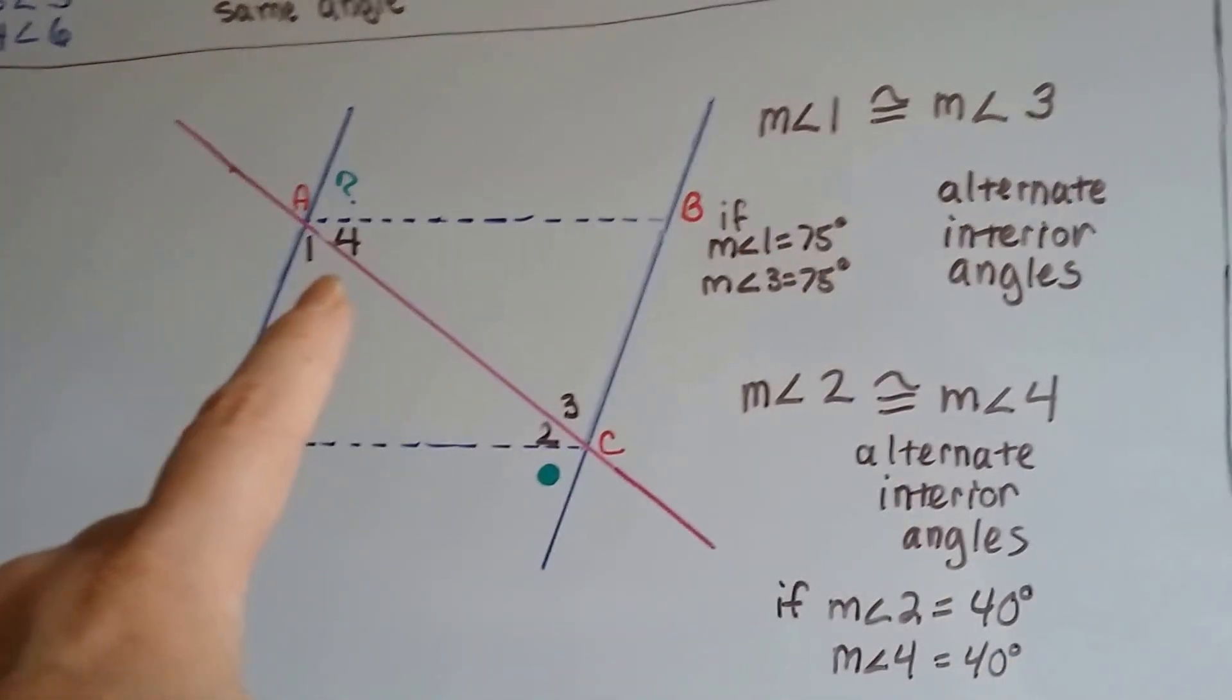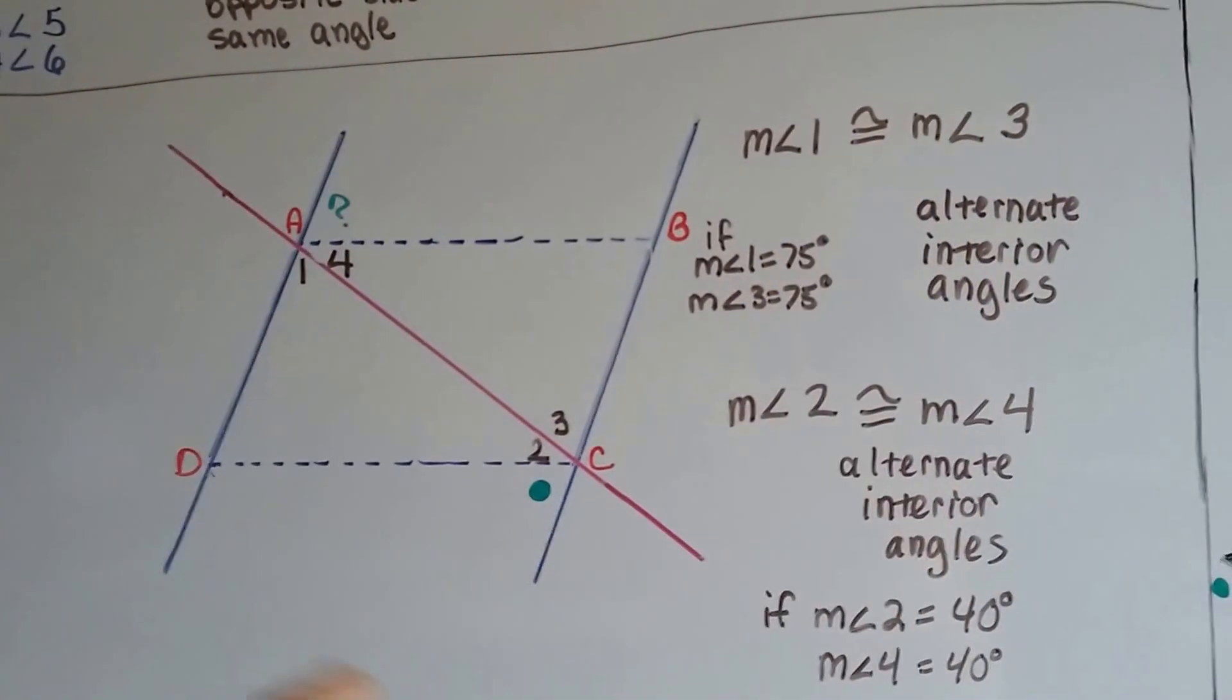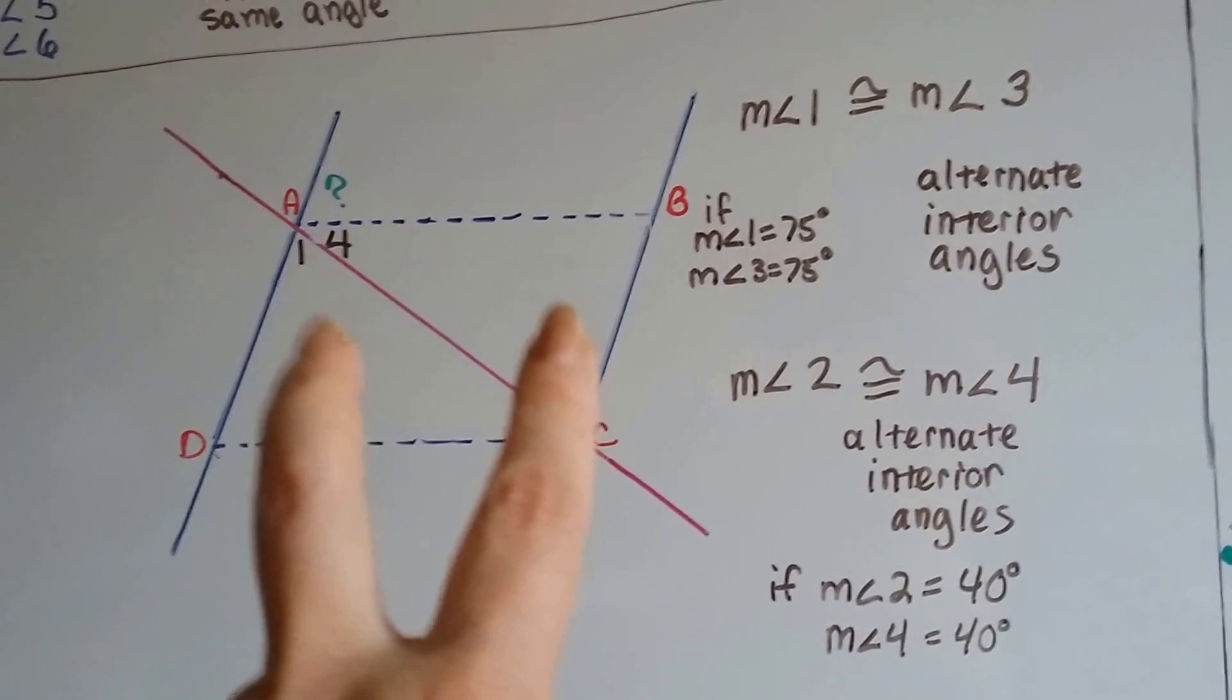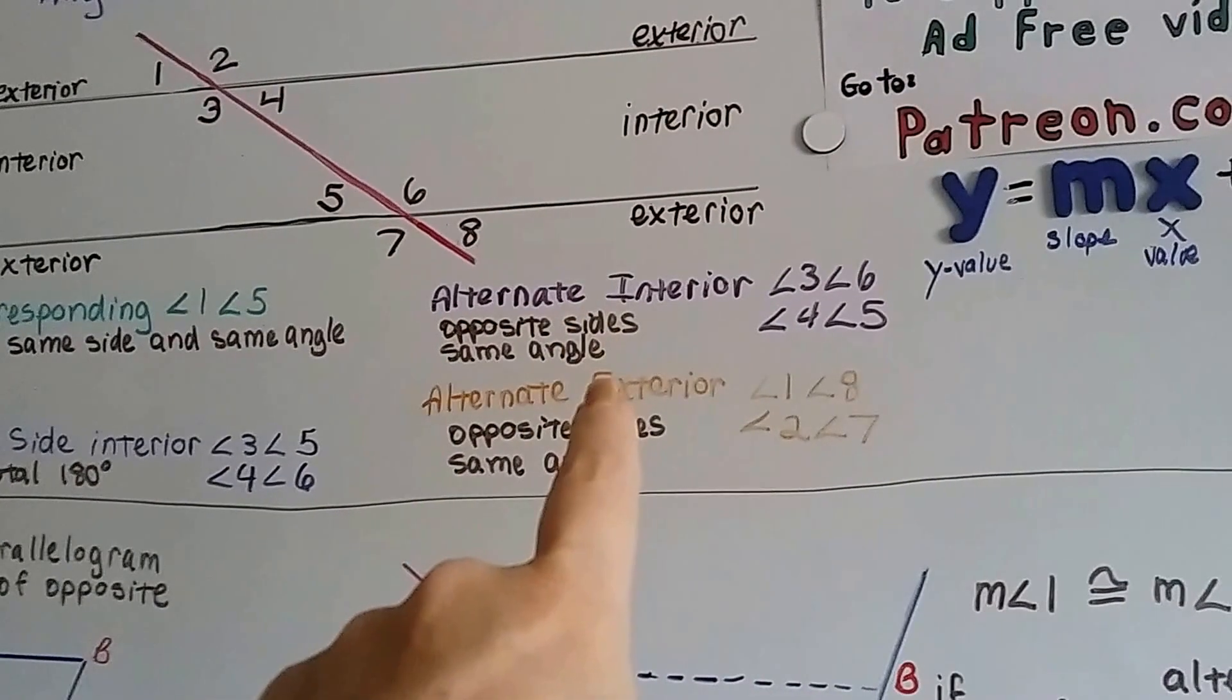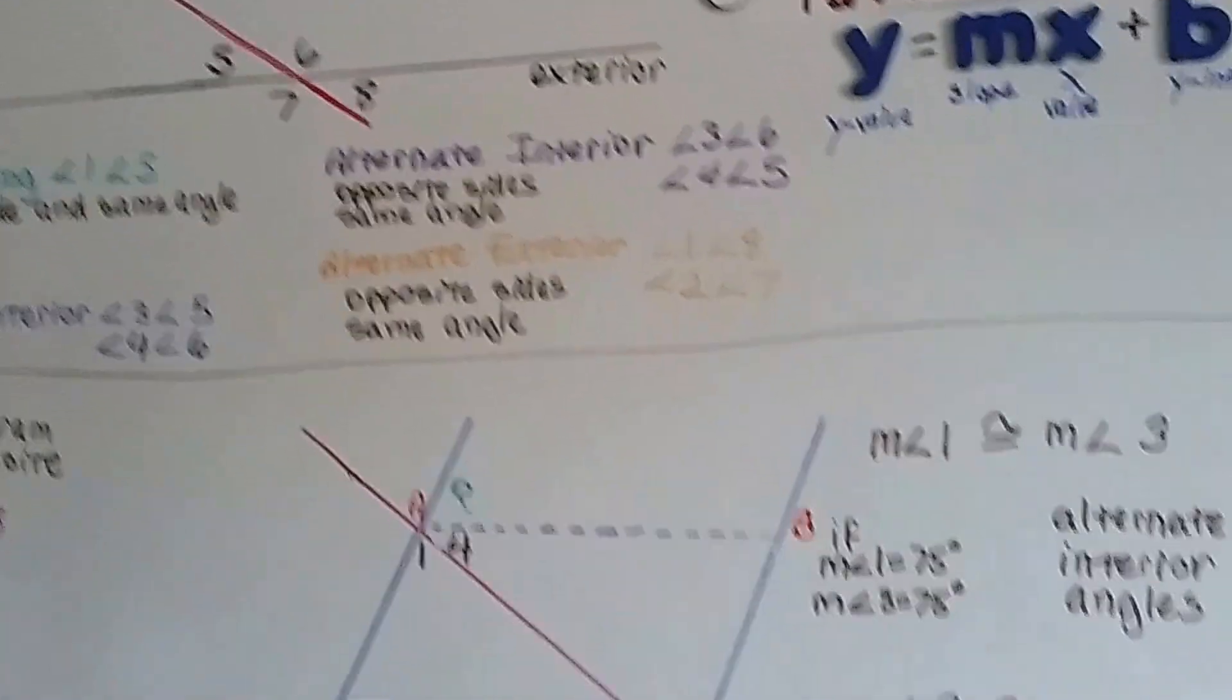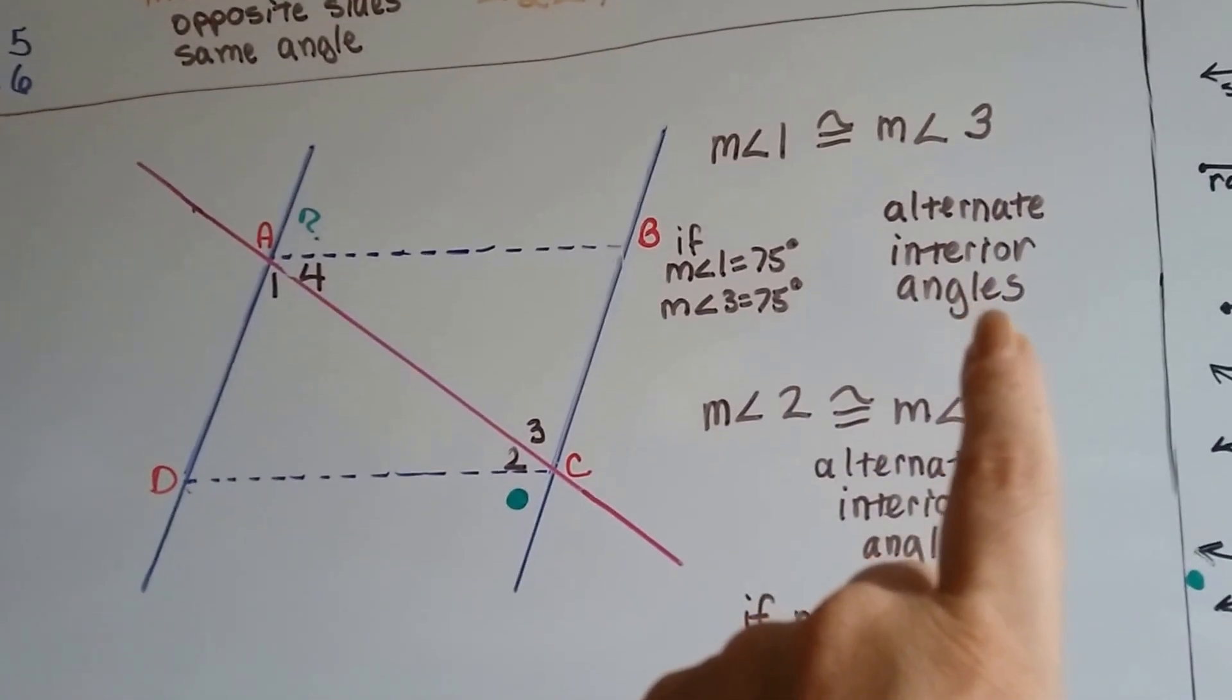So the measure of angle one is going to be congruent. Remember an equal sign with a little wave on top means congruent. It means it's equal to. It's the same. So measure of angle one here is going to be congruent to measure of angle three because of alternate interior angles. That's the rule. Alternate interior angles, they're opposite sides of the transversal like three and six or four and five. They have the same angle measure. They're congruent. So we know that the measure of angle one is congruent to the measure of angle three because of that rule, alternate interior angles.